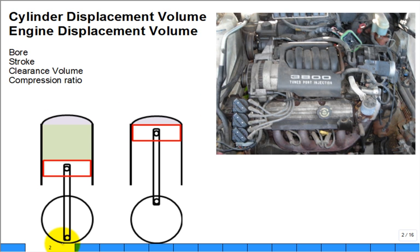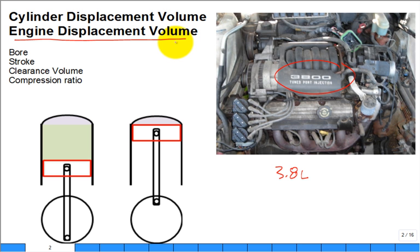I talked about engine displacements last time. Some people said, 'Oh, I have a 3.8 liter engine' — this is one that's in the vehicle I own, a Buick. In a lot of Buicks there's a 3800, a 3.8 liter. What exactly is that? It's the engine displacement volume.